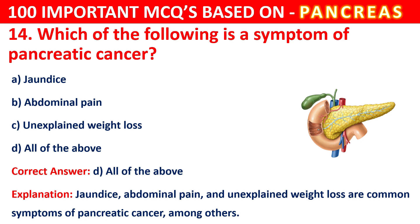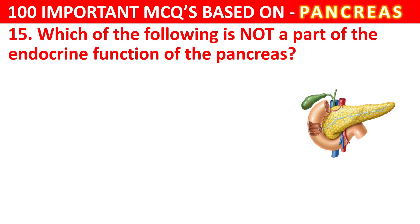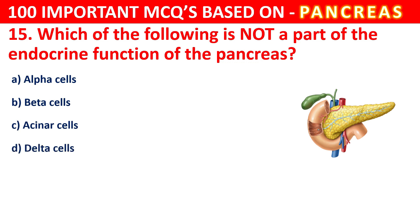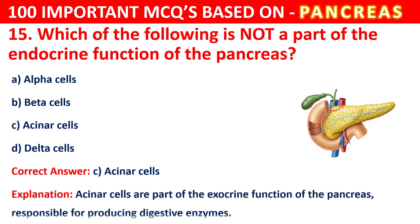Question 15. Which of the following is not a part of the endocrine function of the pancreas? Your options are Alpha cells, Beta cells, Acinar cells, or Delta cells. The correct answer is C, that is Acinar cells. Acinar cells are part of the exocrine function of the pancreas, responsible for producing digestive enzymes.